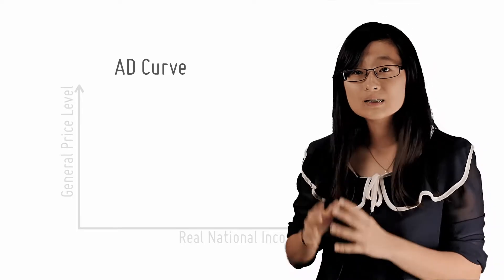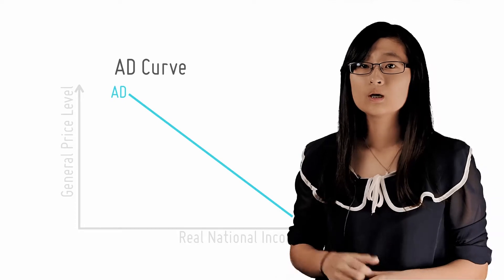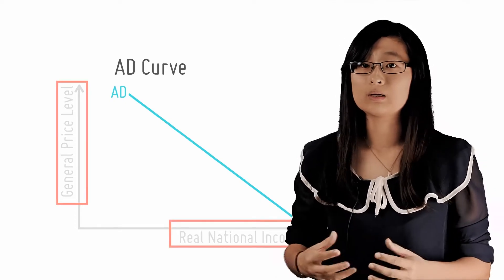Now the AD curve itself is simply a diagonal sloping line and it looks identical to the demand curve in macroeconomics. So the only way to distinguish the two is by the axes. So we cannot forget to label them in exams.